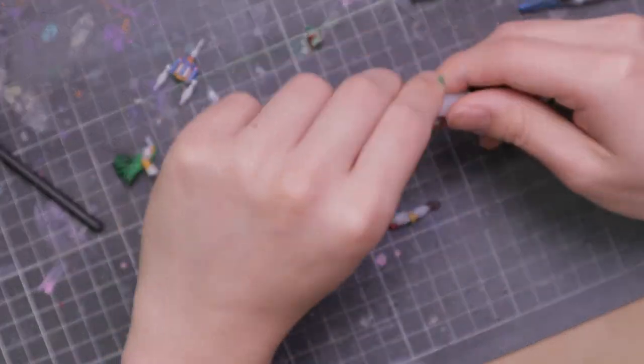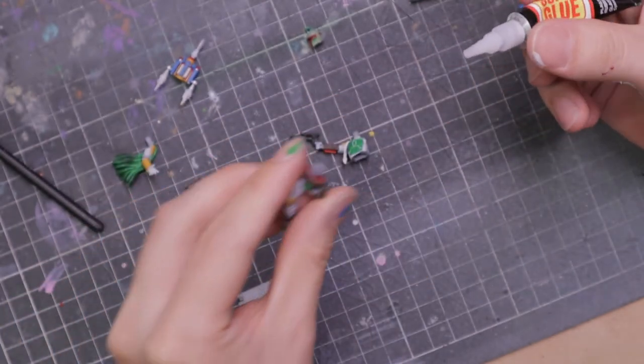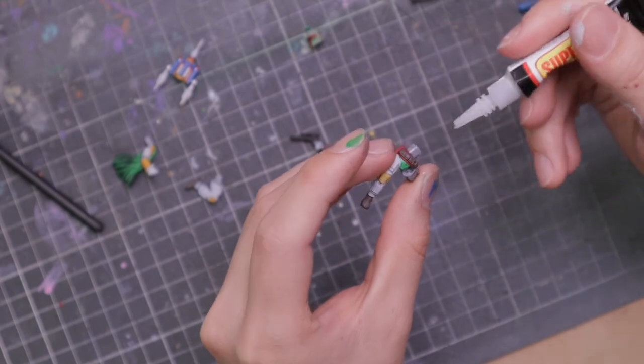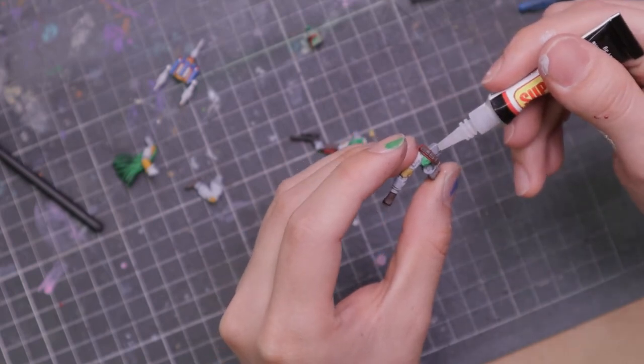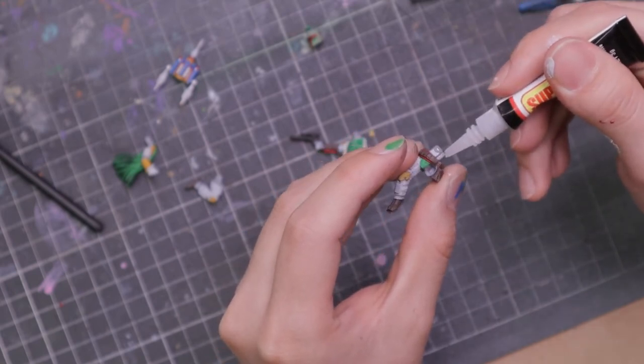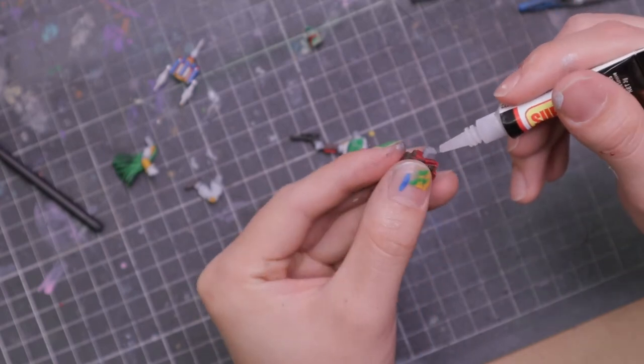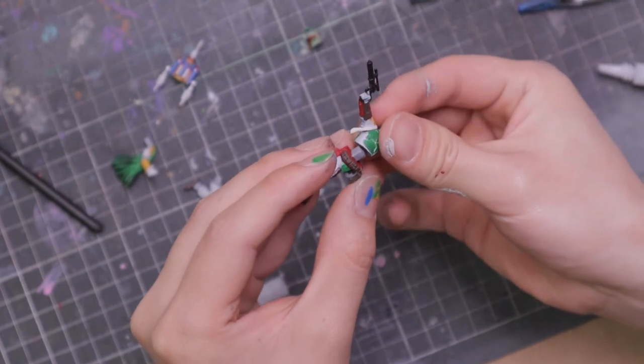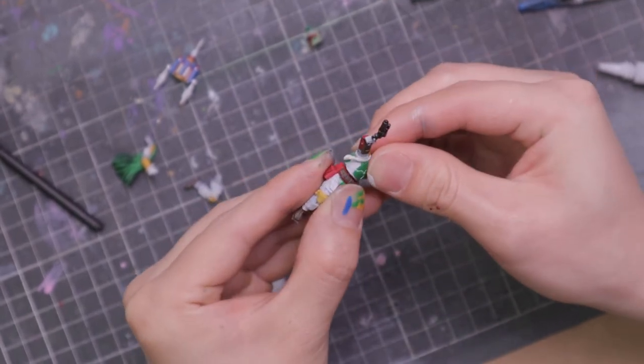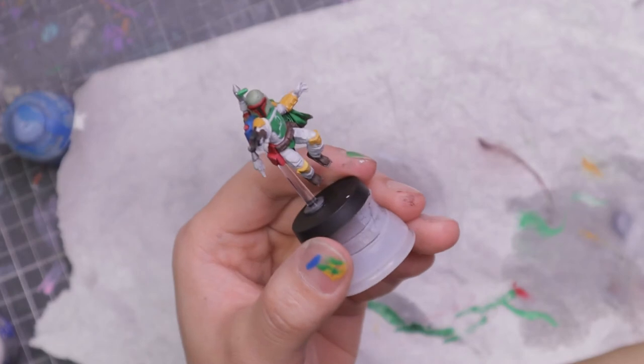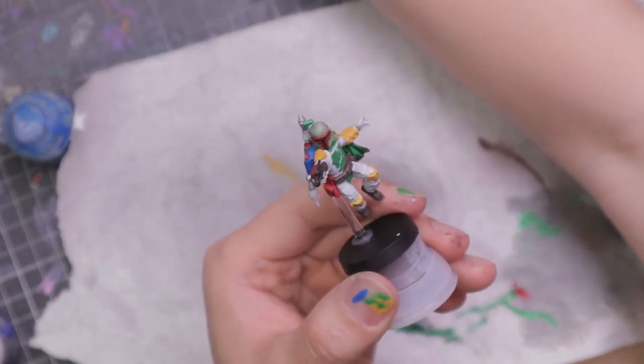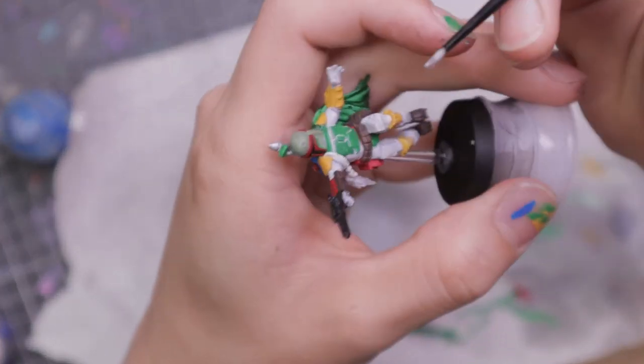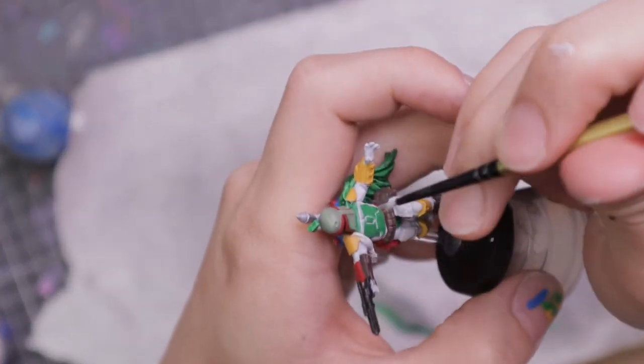Now we're going to assemble Boba Fett back together so I can do the washes and stuff, because having him separated was easier for blocking out the base colors. Now I'm going to do some battle damage before I do my washes. For all the chipped areas, I'm just going to put a little bit of silver in there.